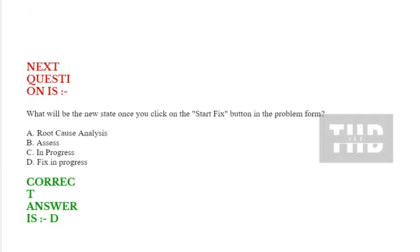Next question: What will be the new state once you click on the Start Fix button in the problem form? Option A: Root cause analysis. Option B: Assess. Option C: In progress. Option D: Fix in progress. Correct answer is option D.